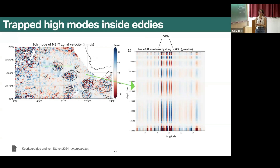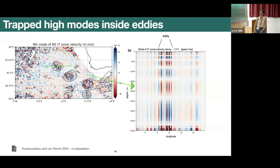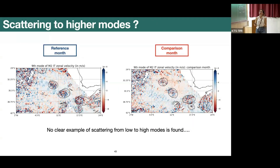Looking back at the higher modes — we see this trapping of structures inside the eddies. In the cross section on the right, the x-axis shows longitude and the eddy is located around 9 to 11 south. Those strong signals are captured inside the water column where the eddy is located, all along the water column, while outside those values are quite weak. This is actually something we were not really expecting, since the eddies are only around one thousand meters deep.